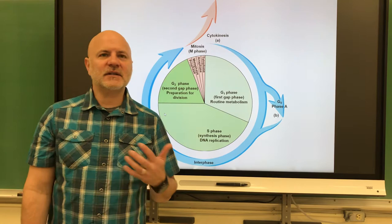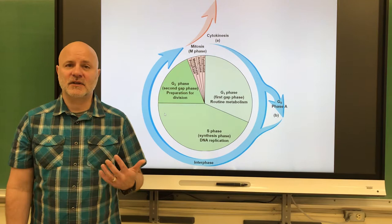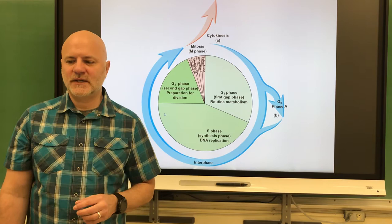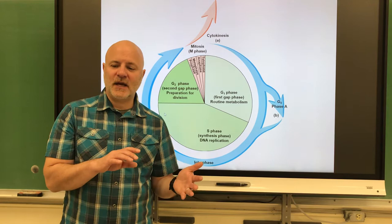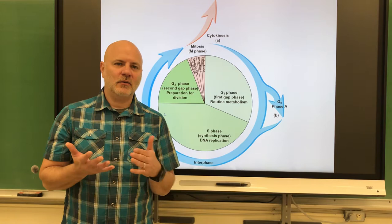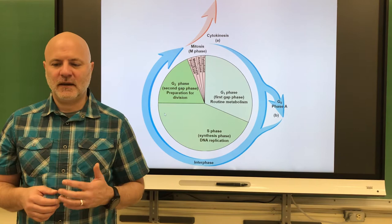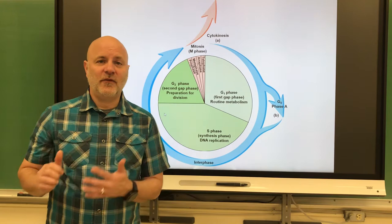In cell division there are two processes: cytokinesis, which is the division of the cytoplasm, and karyokinesis, which is the division of the nucleus. There are two types of karyokinesis. Mitosis is the division of a nucleus into two genetically identical daughter nuclei — we start with one diploid cell and end up with two diploid cells, used for growth, development, maintenance, and repair. Meiosis is the division of a diploid nucleus into four haploid nuclei — we start with one diploid nucleus and end up with four haploid nuclei, and this is how we make gametes, egg and sperm cells.